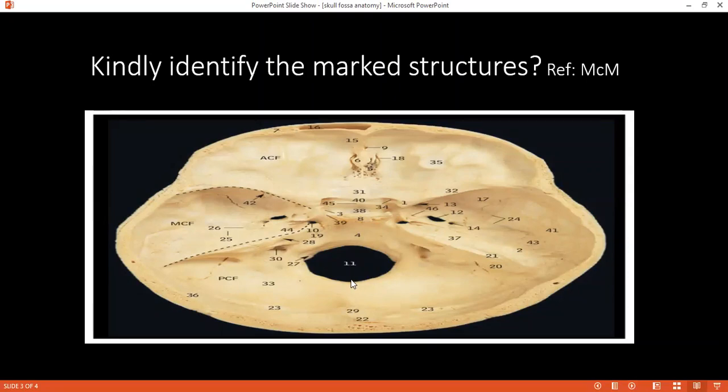What is this number 11? It is foramen magnum. If you can tell me what passes through foramen magnum? The medulla oblongata along with its meningeal coverings, vertebral artery and anterior and posterior spinal arteries, and the tectorial membranes, apical ligament of dens and the spinal part of accessory nerve. Very good.